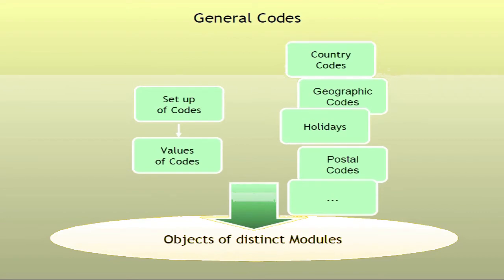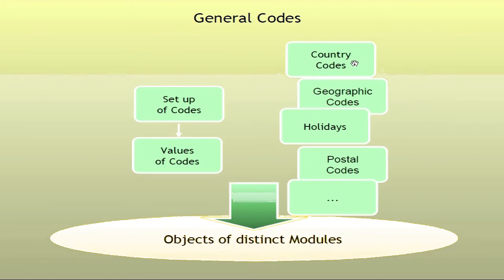The system already has hundreds of codes defined. It is up to each organization to adjust them to their particular needs. There are, on the right side, some specific codes which are very important and have widespread use in the system. That's why they are managed under proper options — that's the case of ISO and national country codes, geographic codes in general, holidays, postal codes, and so on.